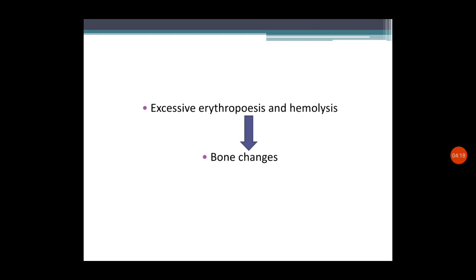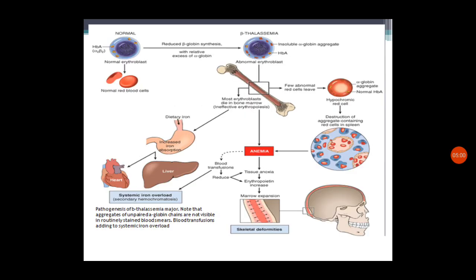In addition, another change that occurs in the body as a result of thalassemia is excessive erythropoiesis and hemolysis, which lead to bone changes. The body detects anemia and increases RBC production, but these defective RBCs undergo hemolysis easily. So production is increasing but the cells are being hemolyzed, which leads to increased bone marrow functioning and bone changes.